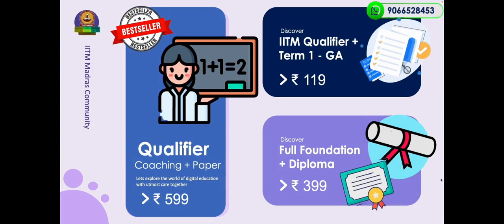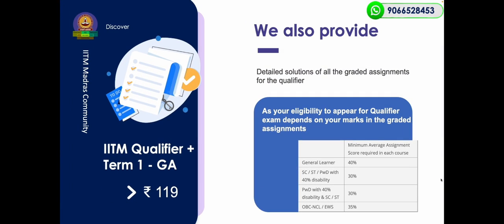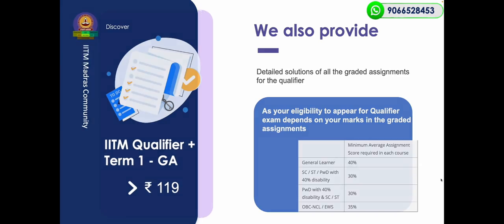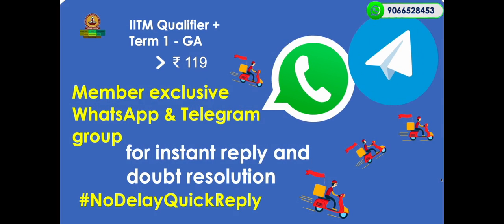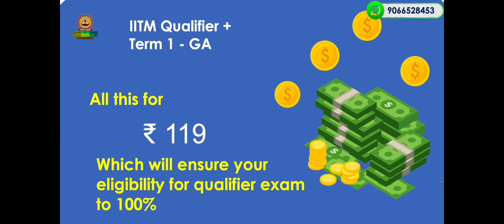We also have other plans. For Rs. 119 we will provide detailed solution of all graded assignments for your qualifiers, as eligibility to appear for qualifier exam depends on your marks in graded assignments. You will also be added to member exclusive WhatsApp and Telegram group for instant reply and doubt resolution for just Rs. 119, which is all it takes to confirm your hall ticket for the qualifier exam.